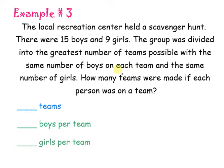Alright, let's look at example number 3. The local recreation center held a scavenger hunt. There were 15 boys and 9 girls. The group was divided into the greatest, there's that word, number of teams possible with the same number of boys on each team and the same number of girls. How many teams were made if each person was on a team? So, this is telling me this word greatest right here and I'm dividing into teams, into groups, that this is going to be a GCF problem.